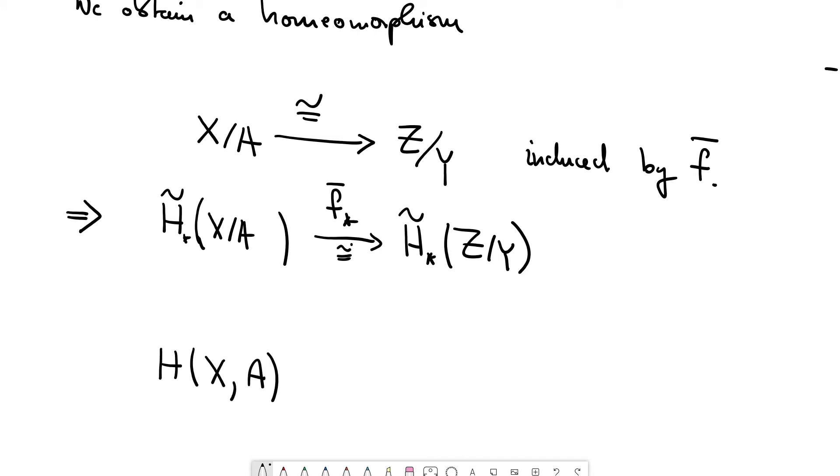The relative homology of X comma A is the same as this absolute homology of the quotient space. This was the interpretation of relative homology as an absolute homology.